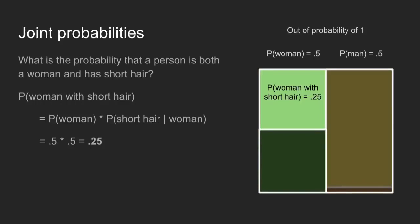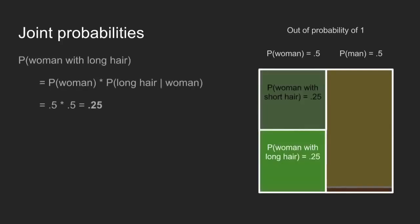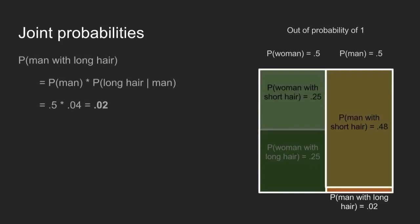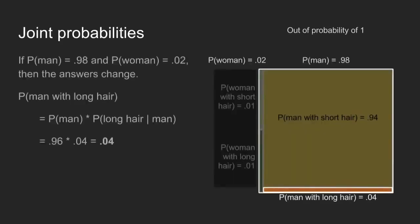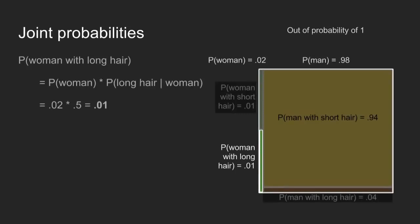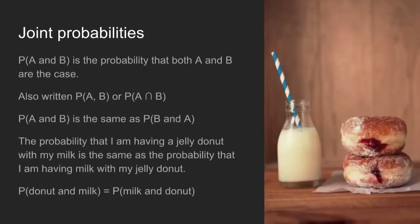Concept two: joint probabilities. What's the probability that a person is both a woman and has short hair? To calculate a joint probability, you first find their conditional probability — if I know that they're a woman, what's the probability that they have short hair? — and then you multiply that by the probability that they're a woman. So in this case, 0.5 times 0.5, we get 0.25. In the men's restroom: the probability that someone is a man and has long hair is 4%; someone is a woman and has long hair is 1%. Joint probabilities are different than conditional probabilities — the probability that A and B is the case is the same as the probability that B and A is the case. The probability that I'm having a jelly donut with my milk is the same as the probability that I'm having milk with my jelly donut.